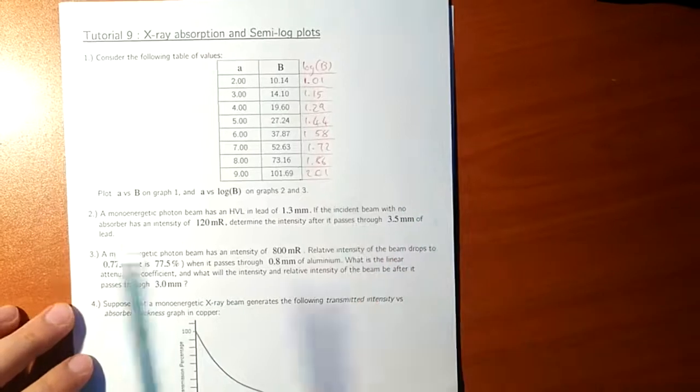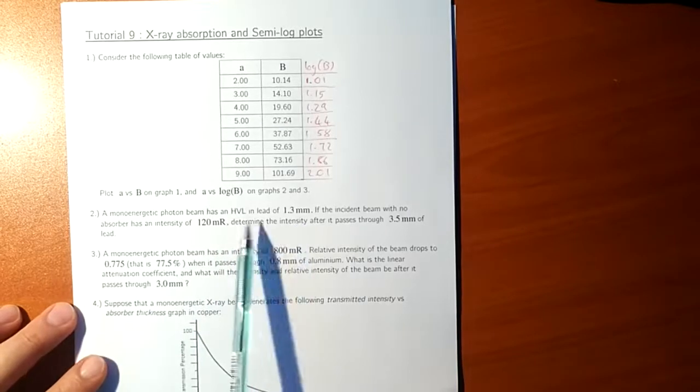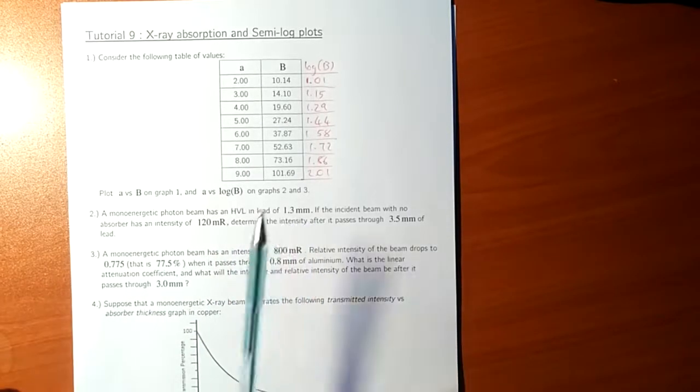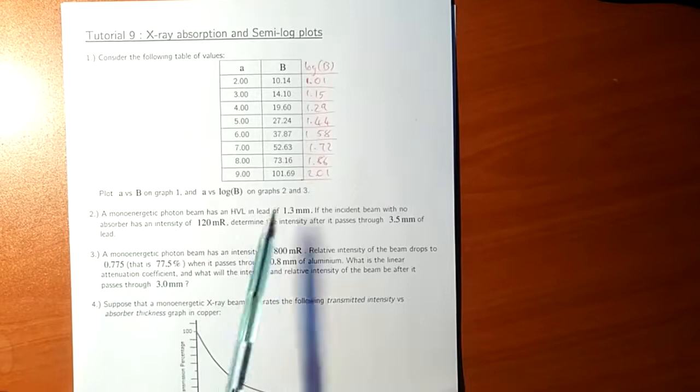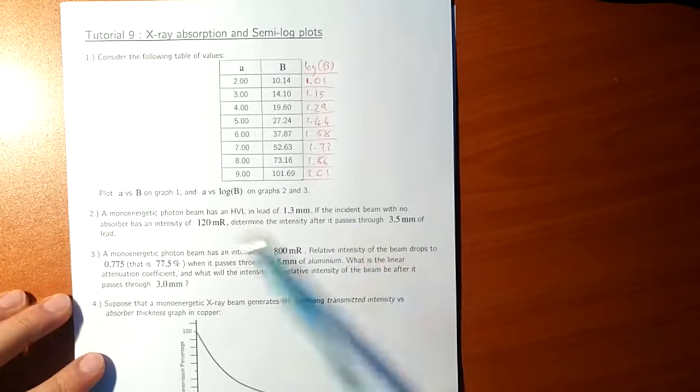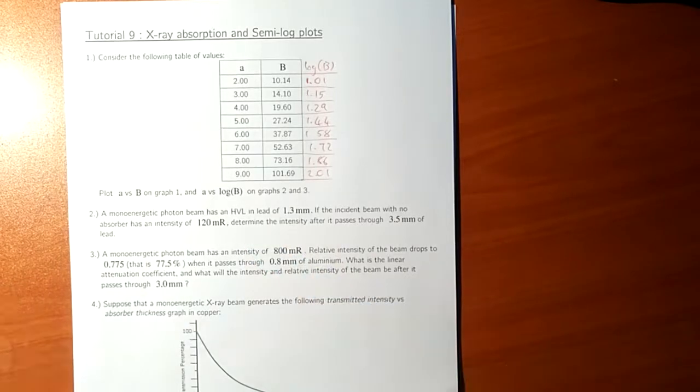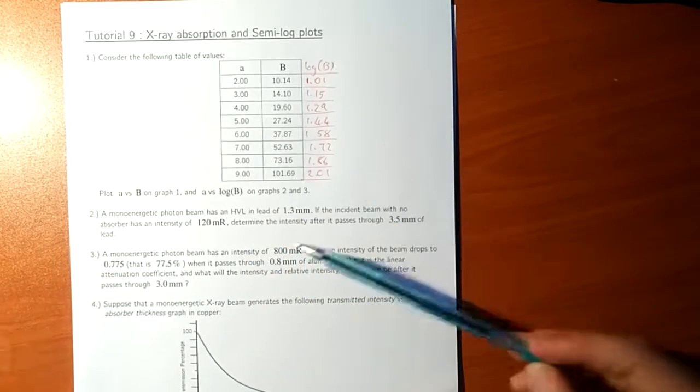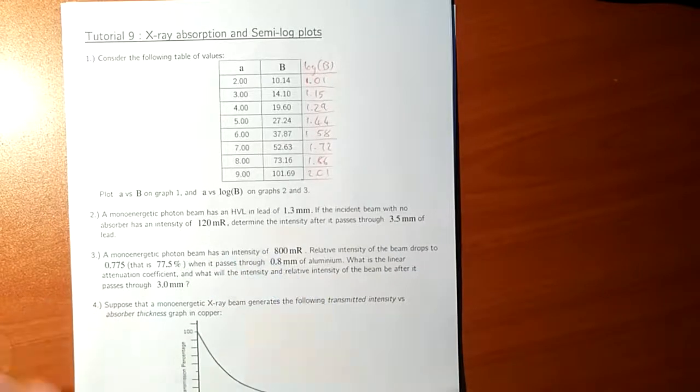Okay, so the first one is relative to the HVL. We're told that the mono-energetic photon beam has an HVL in lead of 1.3 mm. So this 1.3 mm will be specifically for lead and for the photon beam at whatever energy it is at. You change the energy of the photon beam or you change the material from lead to something else, the HVL will change. Now, if the incident beam with no absorber has an intensity of 120 mm.